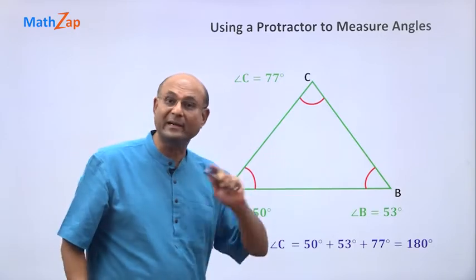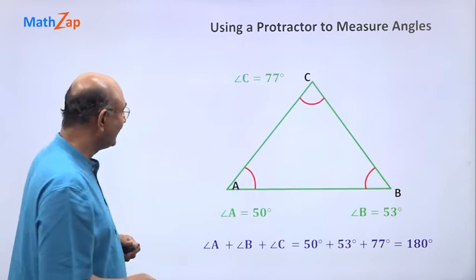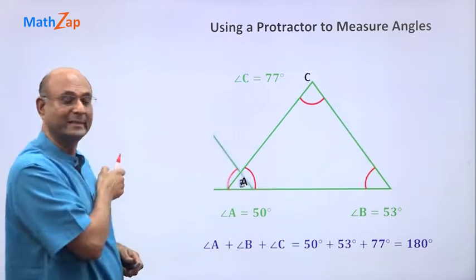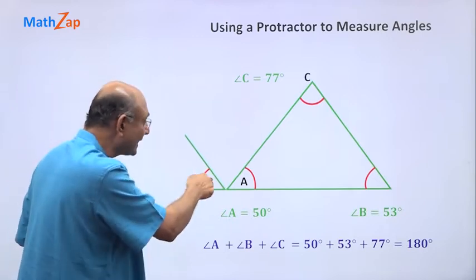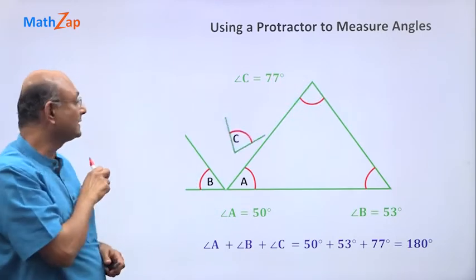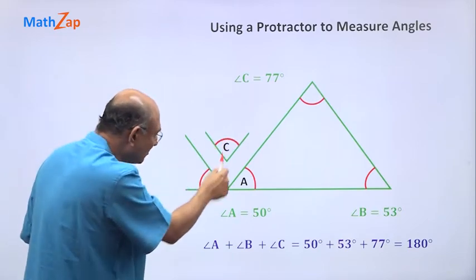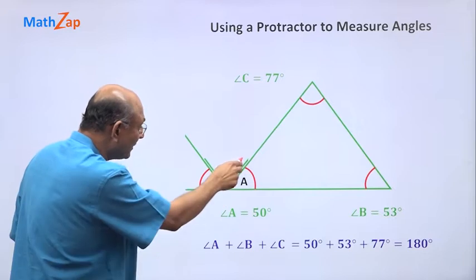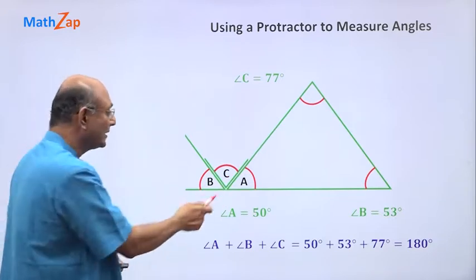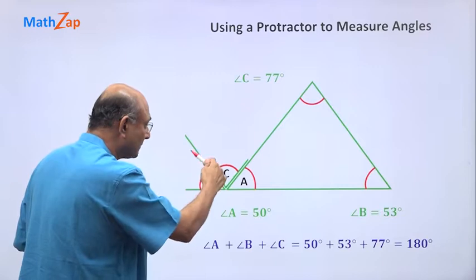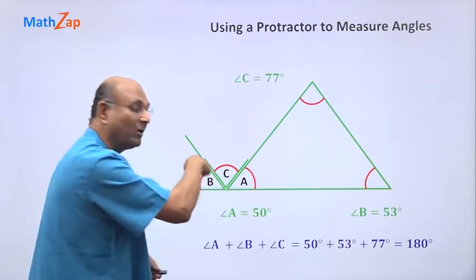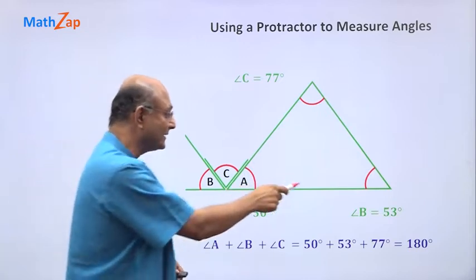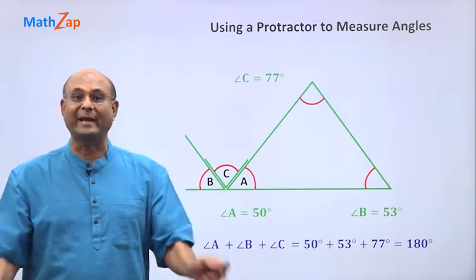This is angle A. Let me take angle B and move it this way. Okay, so this is angle B. Let us take angle C and turn it around. You can see that this is almost fitting there. Let us move this down and see if it fits perfectly. It fits perfectly. So angle A plus angle C plus angle B forms a straight angle, 180 degrees. This is going to be true for every triangle.